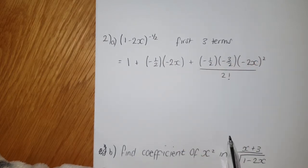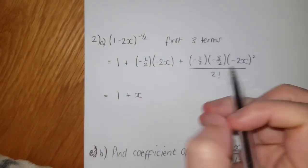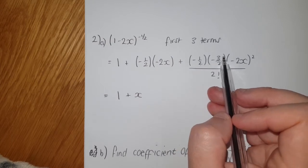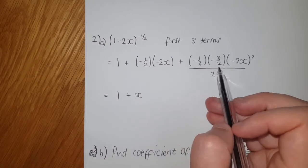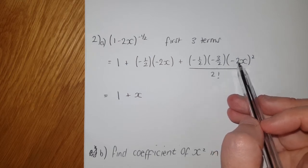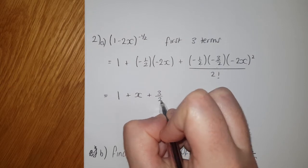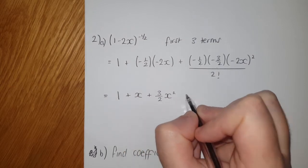That's going to give us 1 plus x. You've got a half and 3 halves are going to give you 3/4. You're then going to times that by 4, so that's just 3, and divide it by 2. We get 3/2 x².